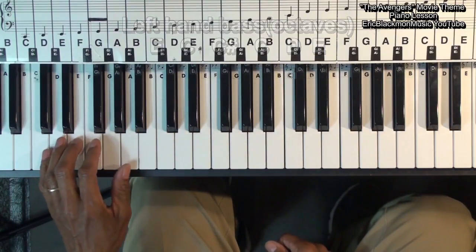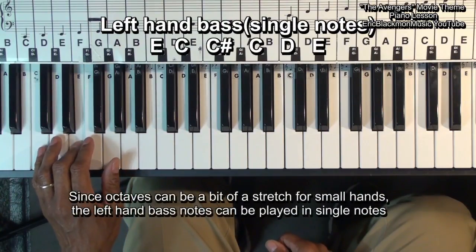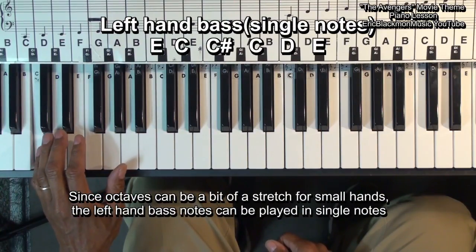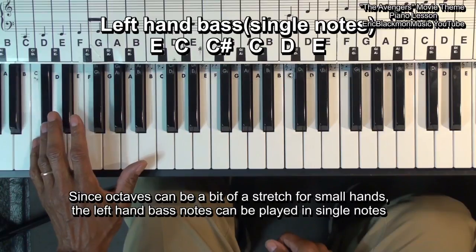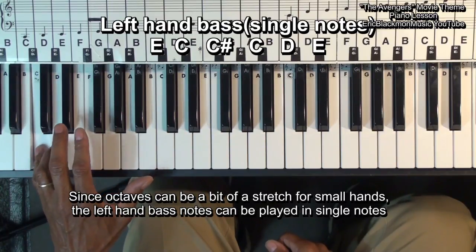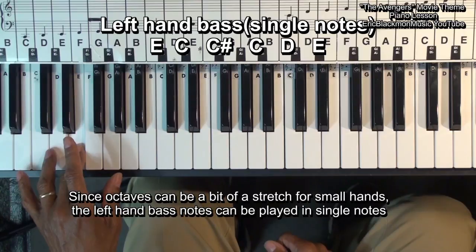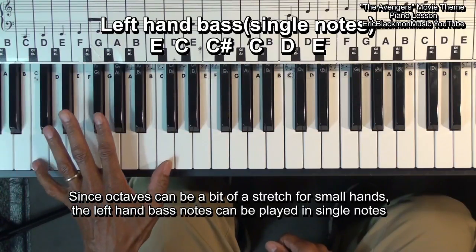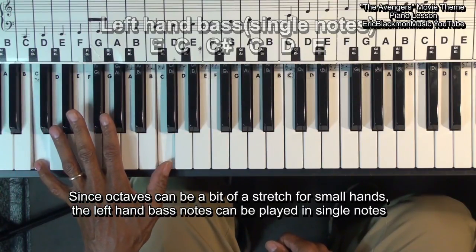Now, if you can't reach this, you can play E, C, C sharp, C, D, E, just like that. That's quite a bit of a stretch for small hands.